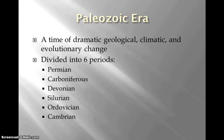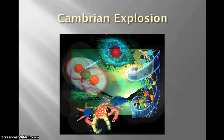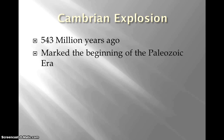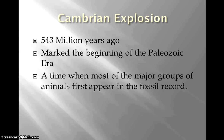On your note sheet, the Permian is at the very top, right by 286 mya and 245 mya. The Cambrian explosion was about 543 million years ago. It marked the beginning of the Paleozoic era and is a time when most of the major groups of animals first appeared in the fossil record.